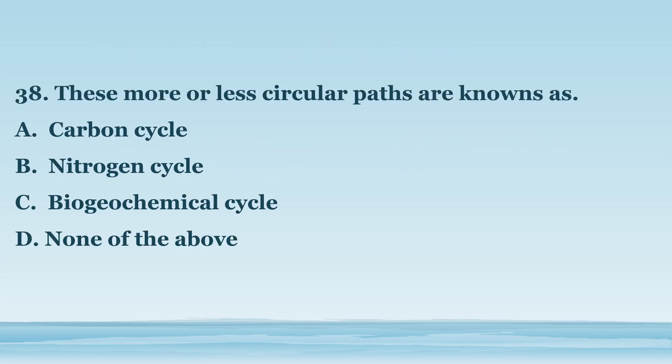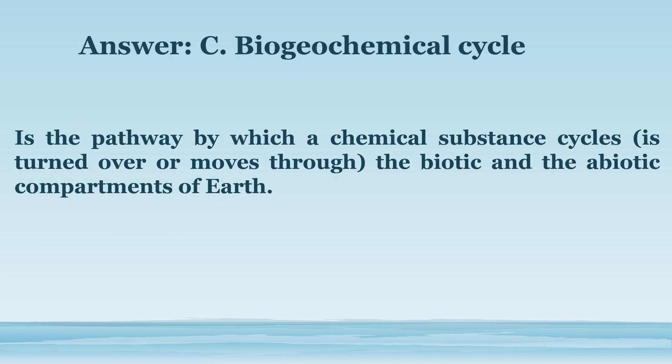Number 38. These more or less circular paths are known as: A. Carbon cycle. B. Nitrogen cycle. C. Biogeochemical cycle. D. None of the above. The answer is letter C. Biogeochemical cycle. Is the pathway by which a chemical substance cycles — is turned over or moves through the biotic and abiotic compartments of earth.